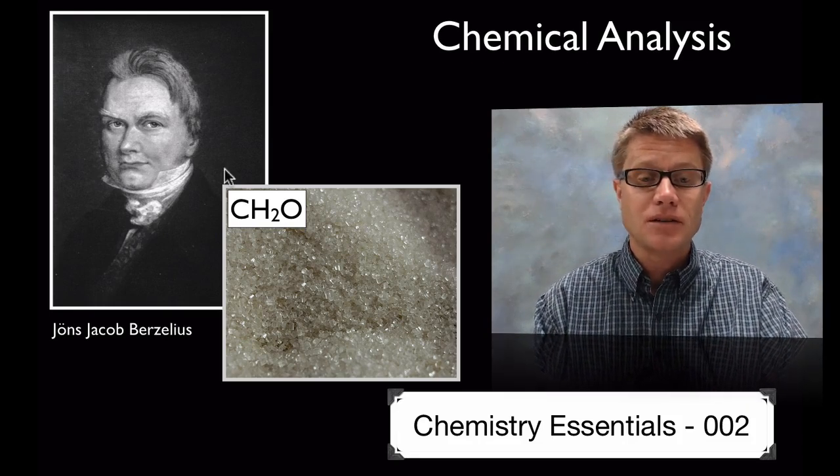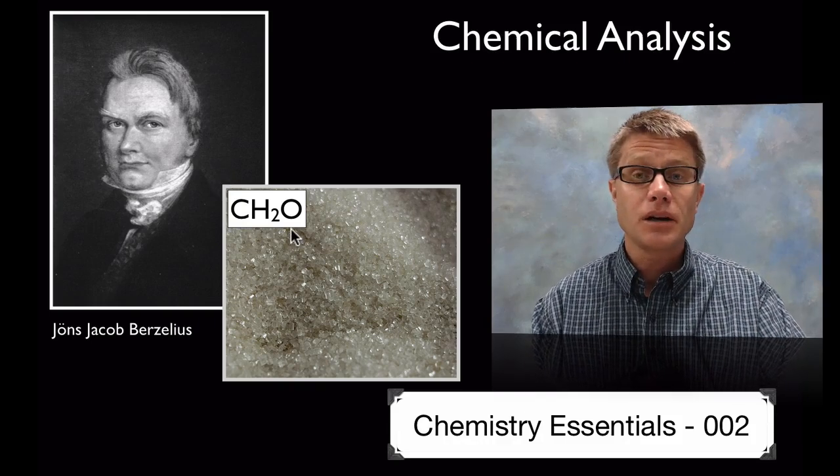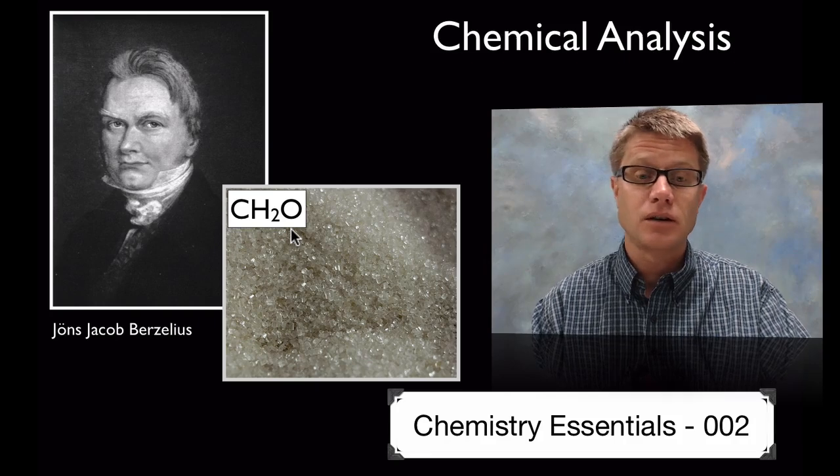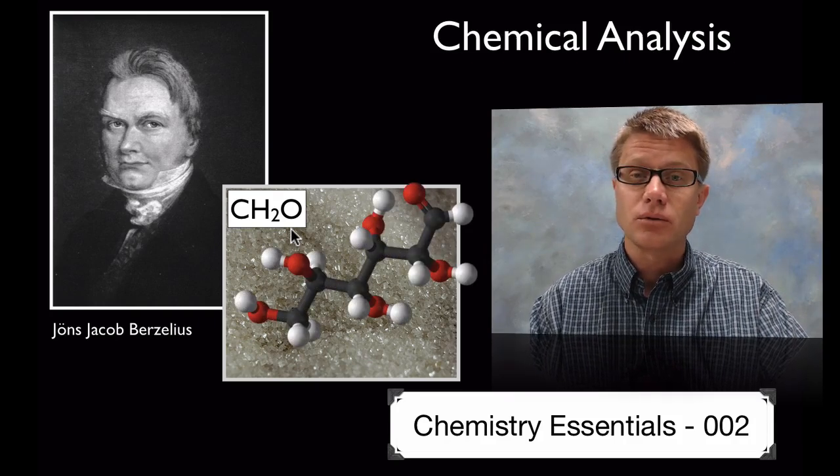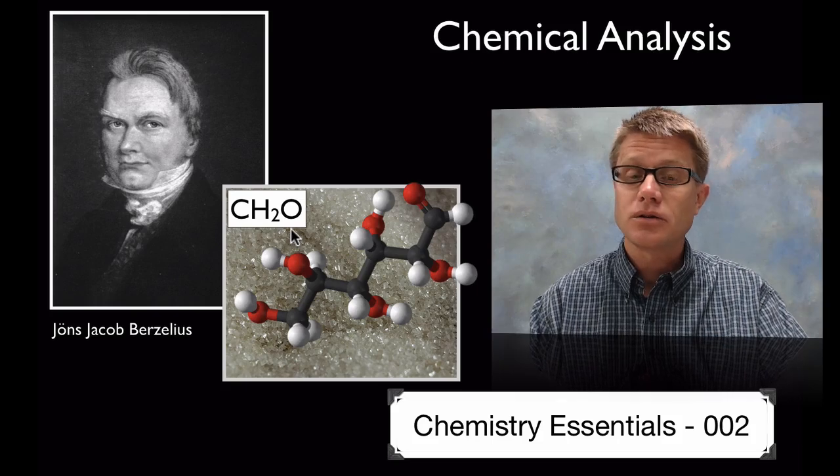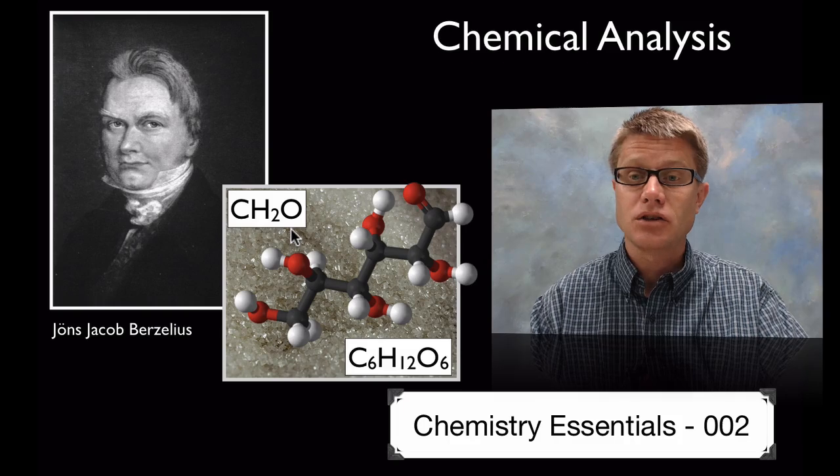So when we write out CH2O, which is actually going to be the empirical formula or the simplest formula of a sugar, let's say glucose, we owe it to him for that. But if we look at the actual structure, this is what glucose looks like. So it's going to have 6 carbon, 12 hydrogen and 6 oxygen.